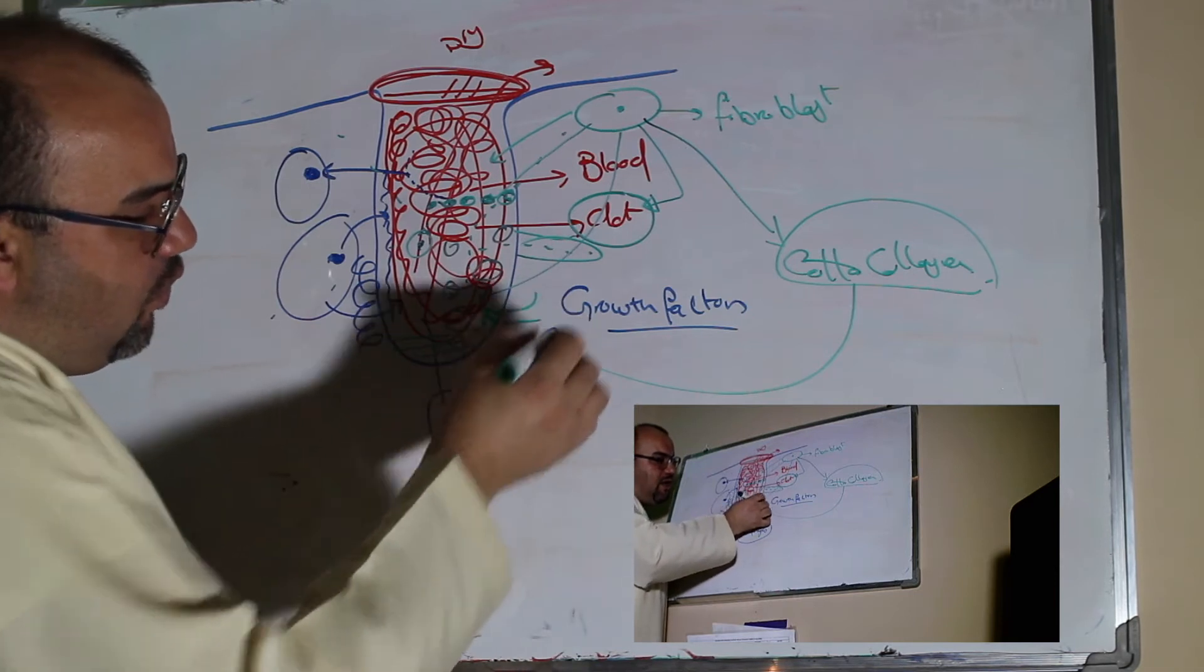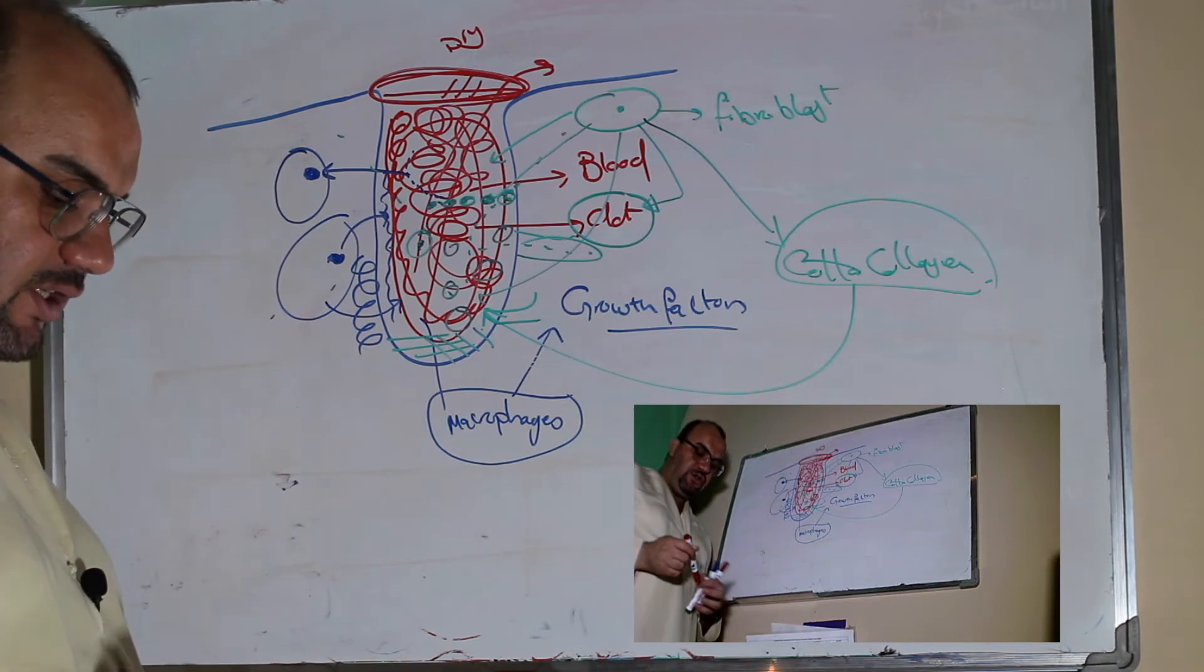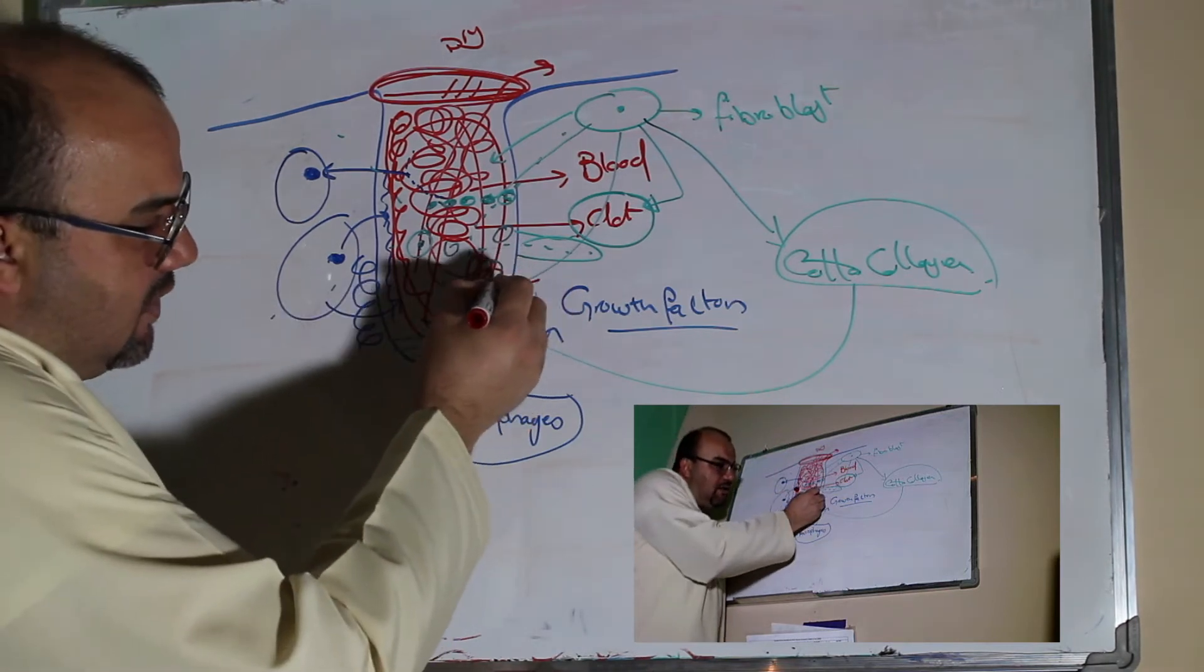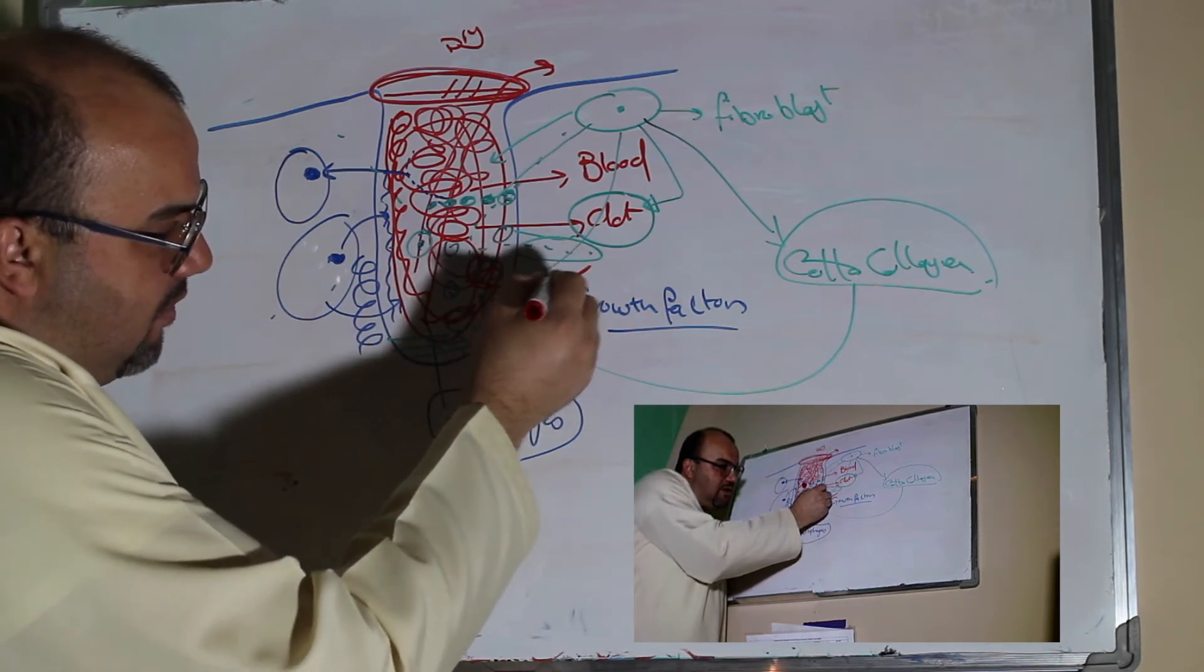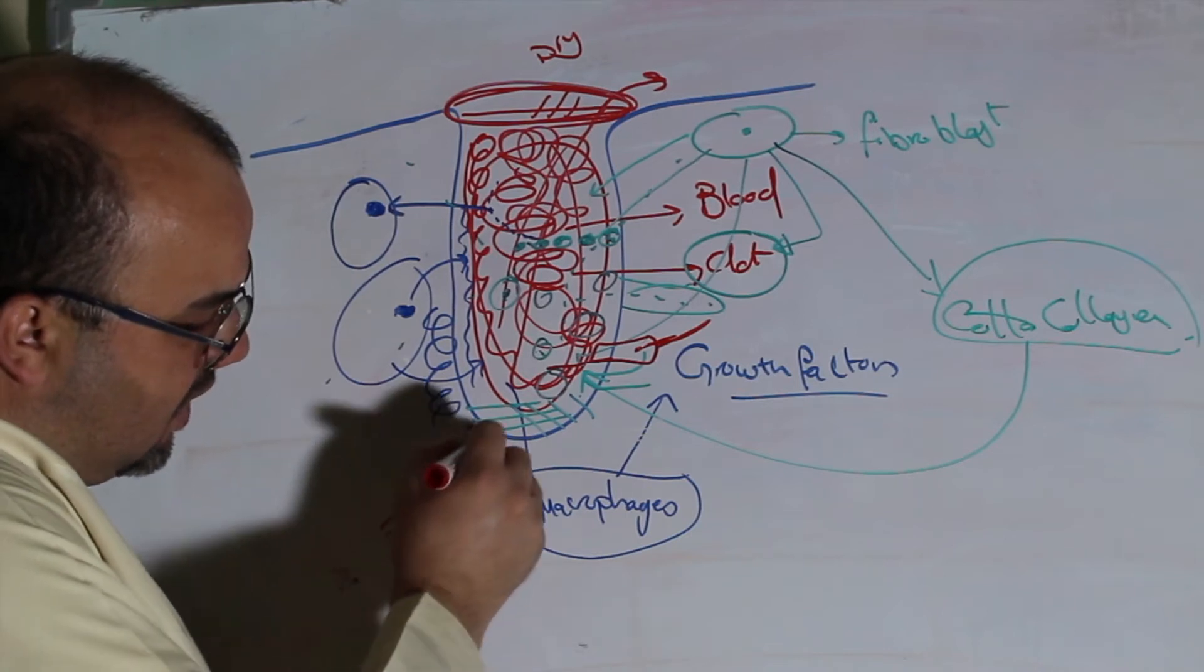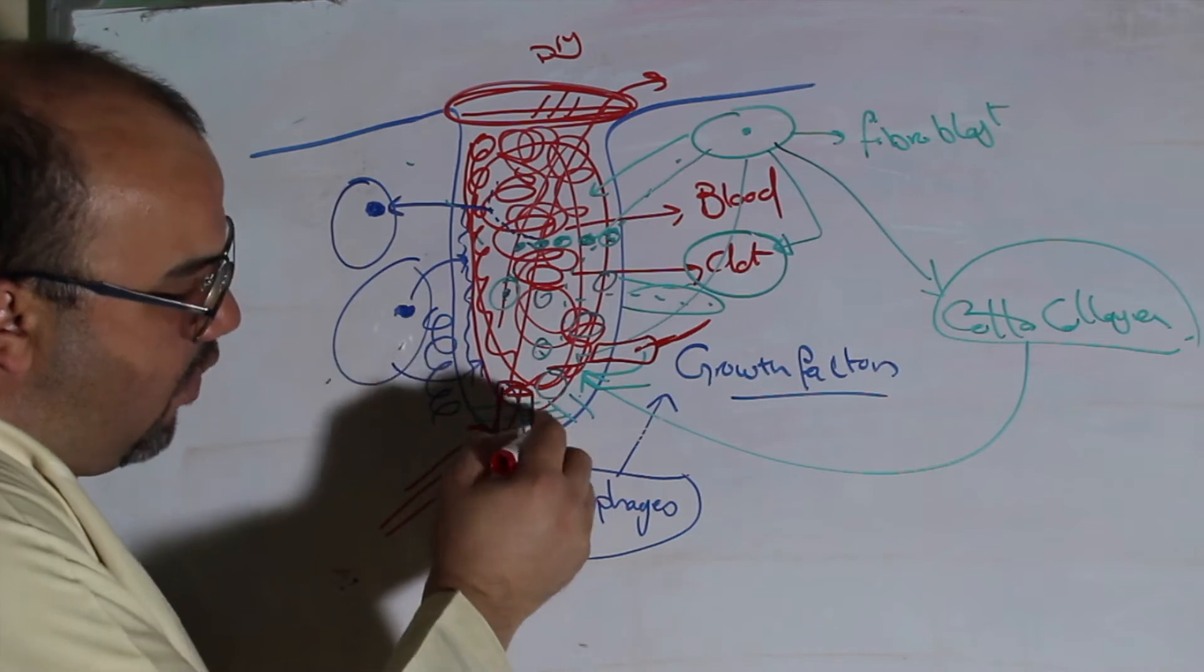Which is building new blood vessels, which is known as angiogenesis or angioneogenesis. It will start here to produce these capillaries, and these capillaries will start to build a way or matrix.